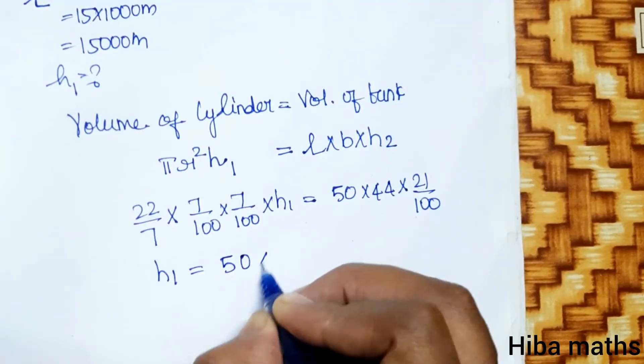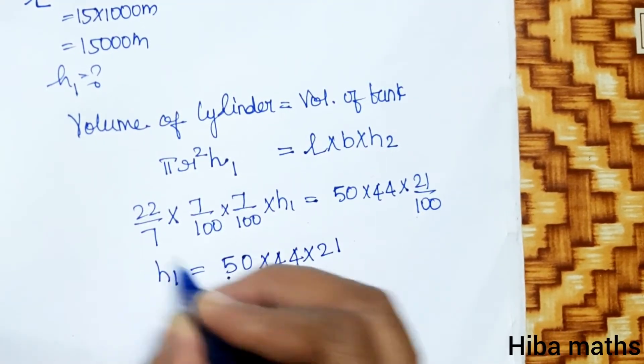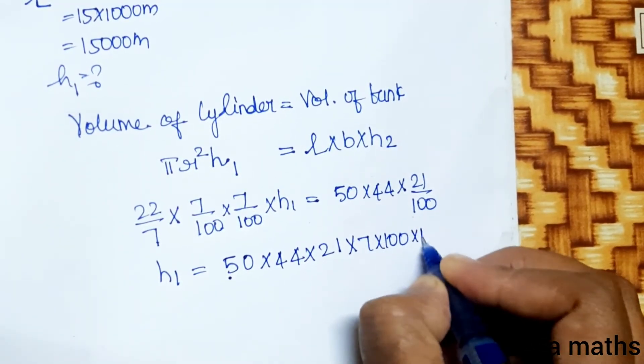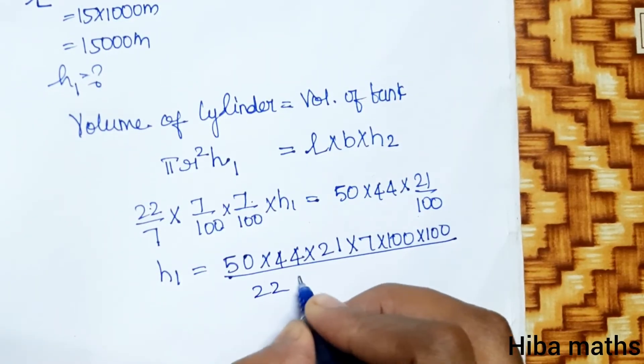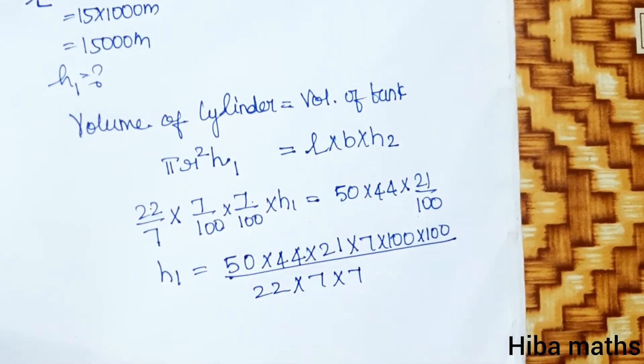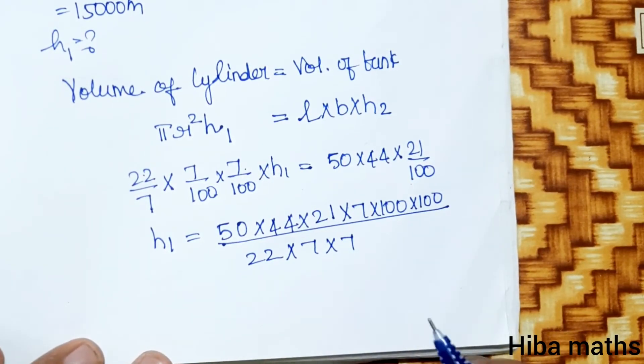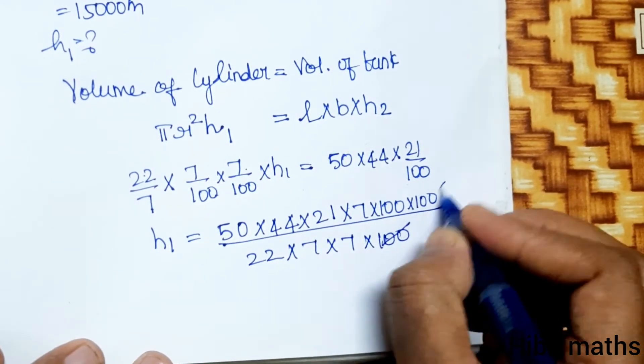50 into 44 into 21. Simplify: 1 into 11, h1 over 1. On the other side there are 100. Cancel.